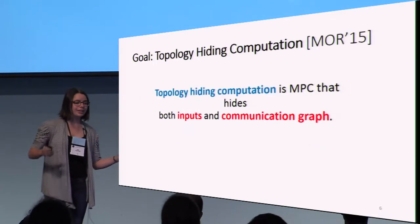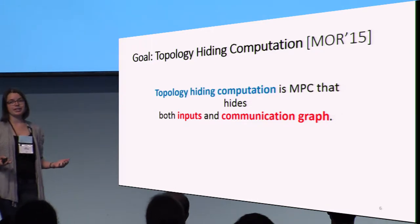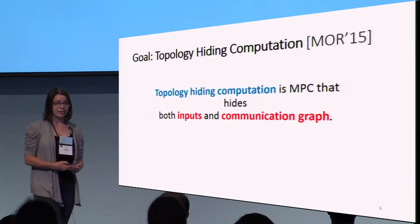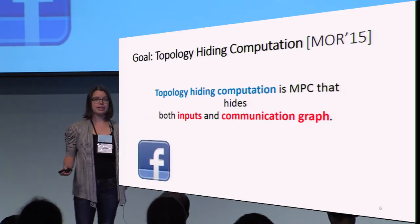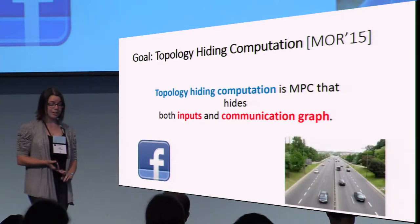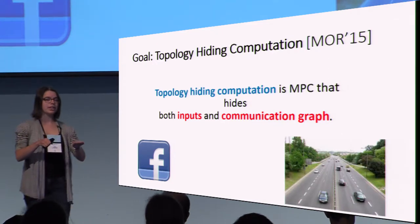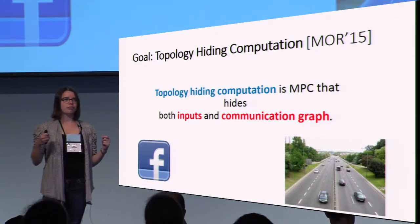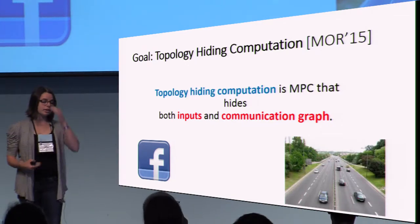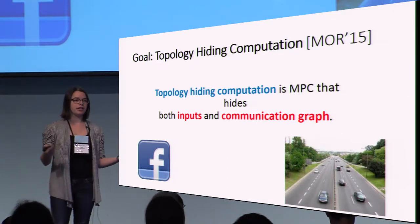And that leads us to our goal. We want to get topology hiding computation. Topology hiding computation is a kind of multi-party computation that hides both the input and the communication graph. It is good for this social network example. There are many applications — another application is maybe you have a vehicular network where when cars are close to each other, they can communicate and disperse information about traffic patterns, hazards, weather on the highway, but maybe you don't want to reveal where you are relative to other cars in this network.